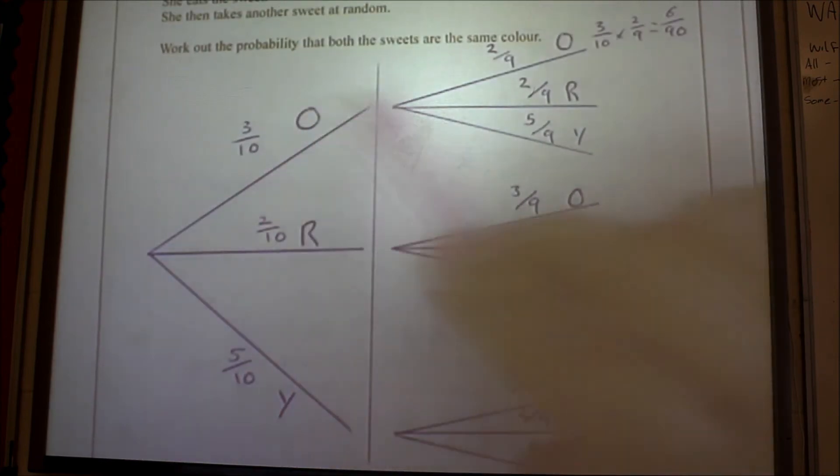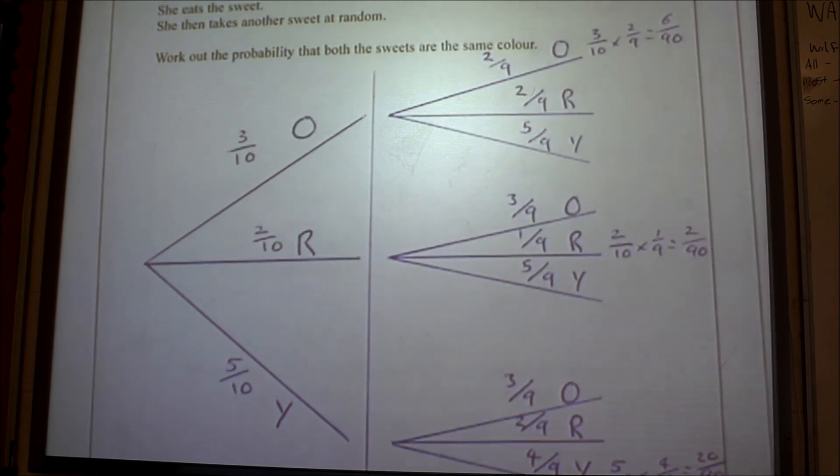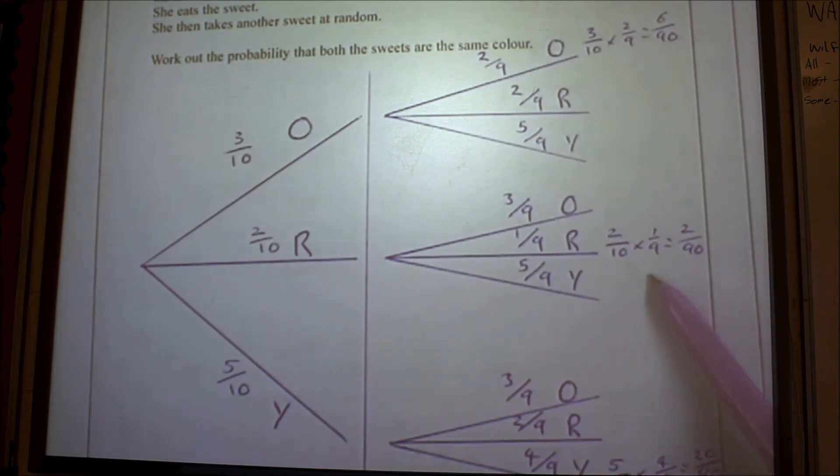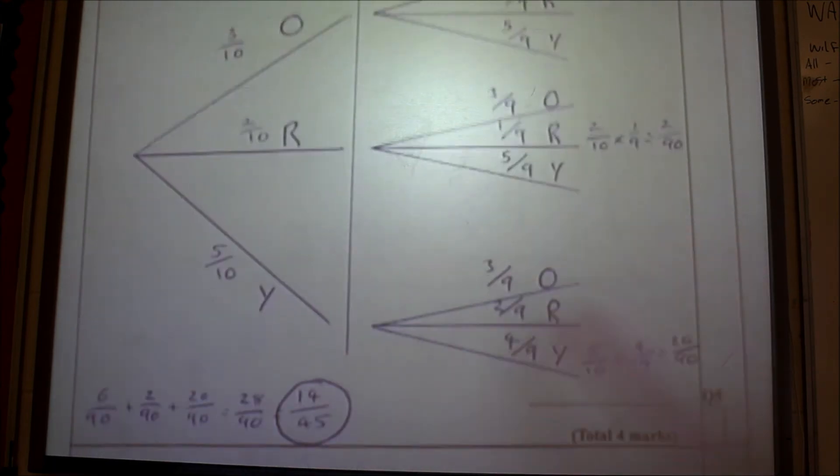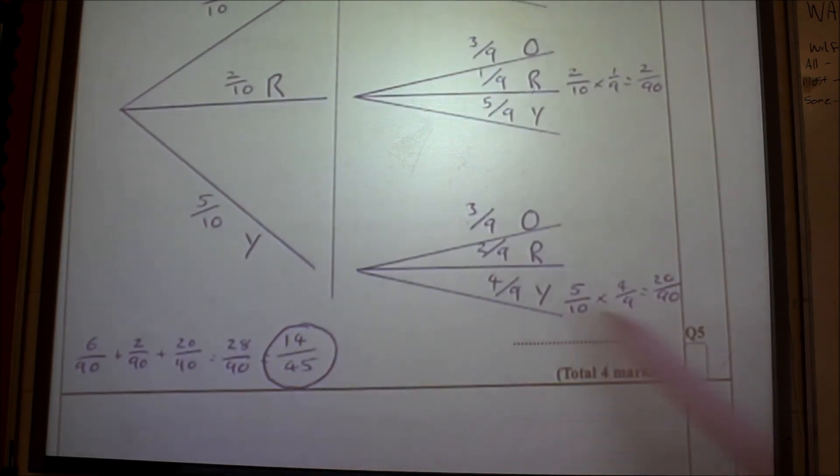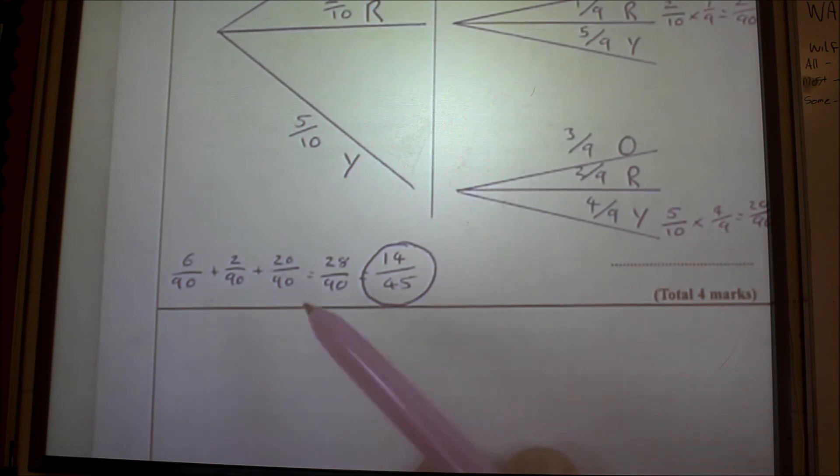Work out the probability the sweets are the same color. So you want orange and orange, which is three tenths times two ninths, which is that. You want red and red, which is two tenths times one ninth, which is that. And yellow and yellow, which is that times that. Add up: six nineties, two ninths, and twenty nineties, and you should get 28 over 90, and simplify that to 14 over 45 for four marks.